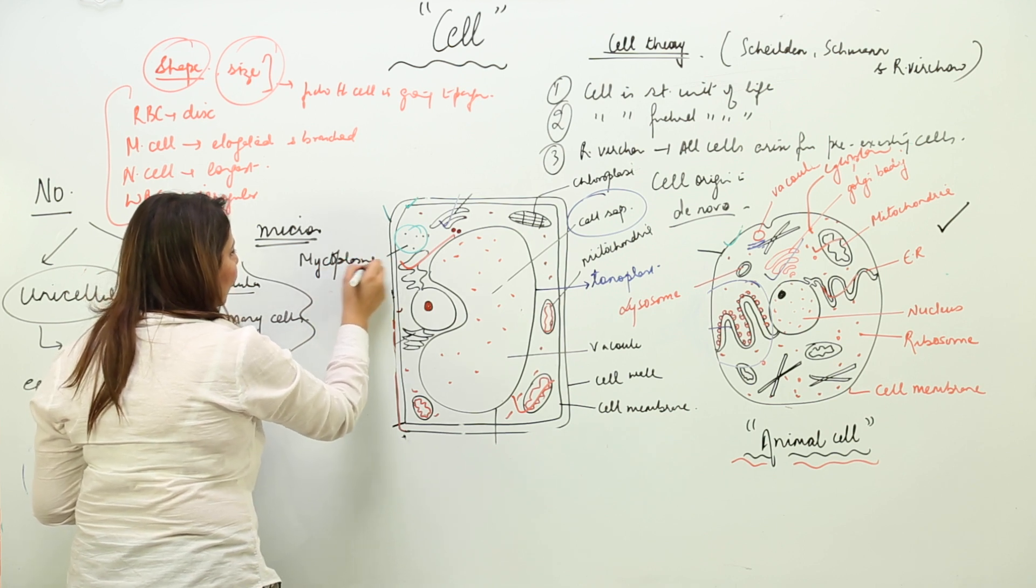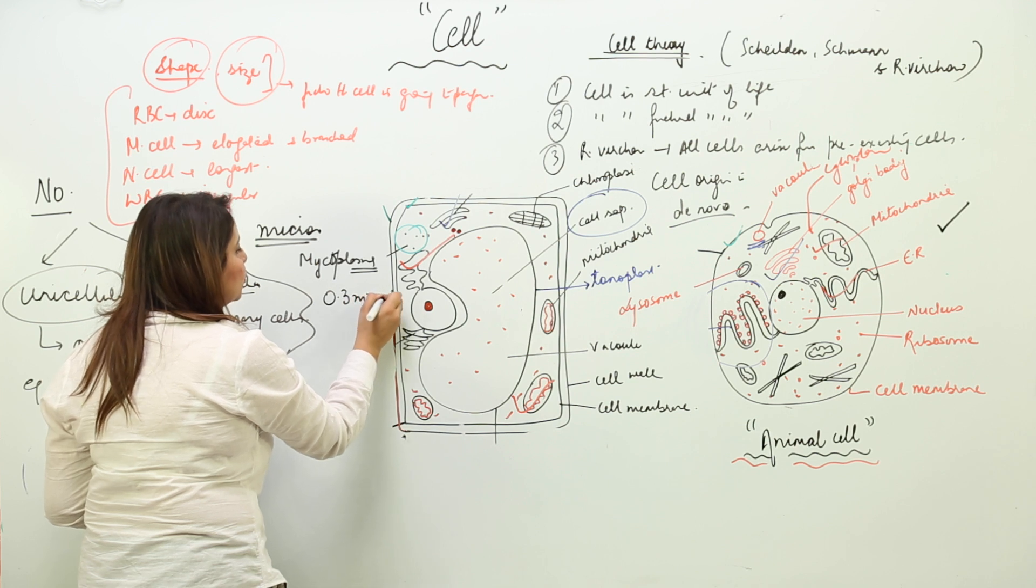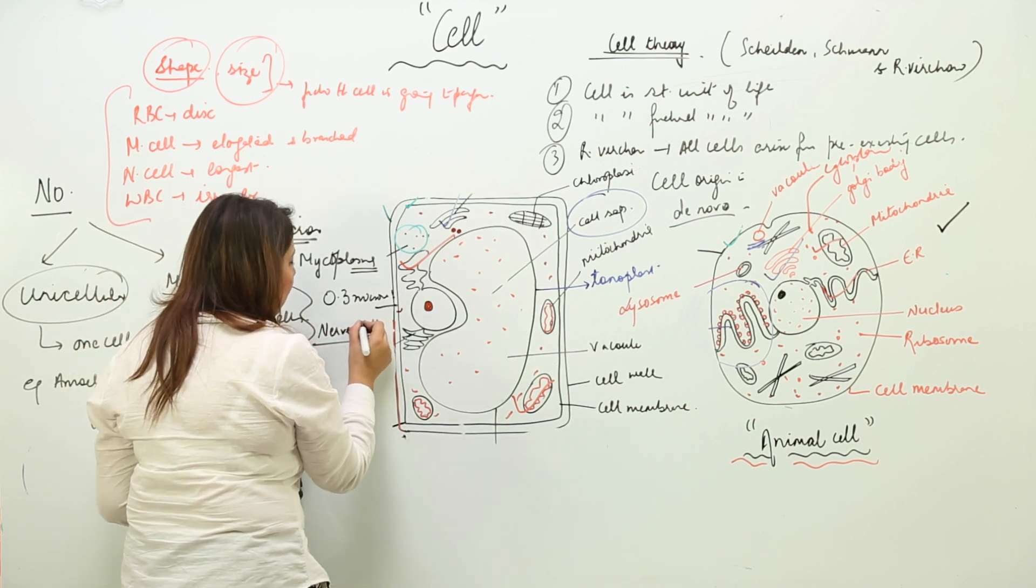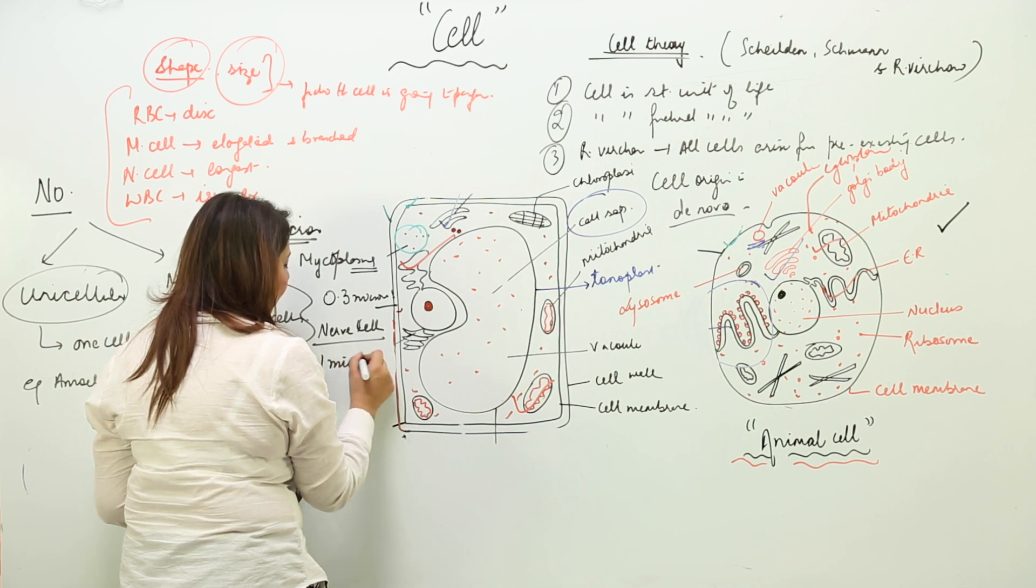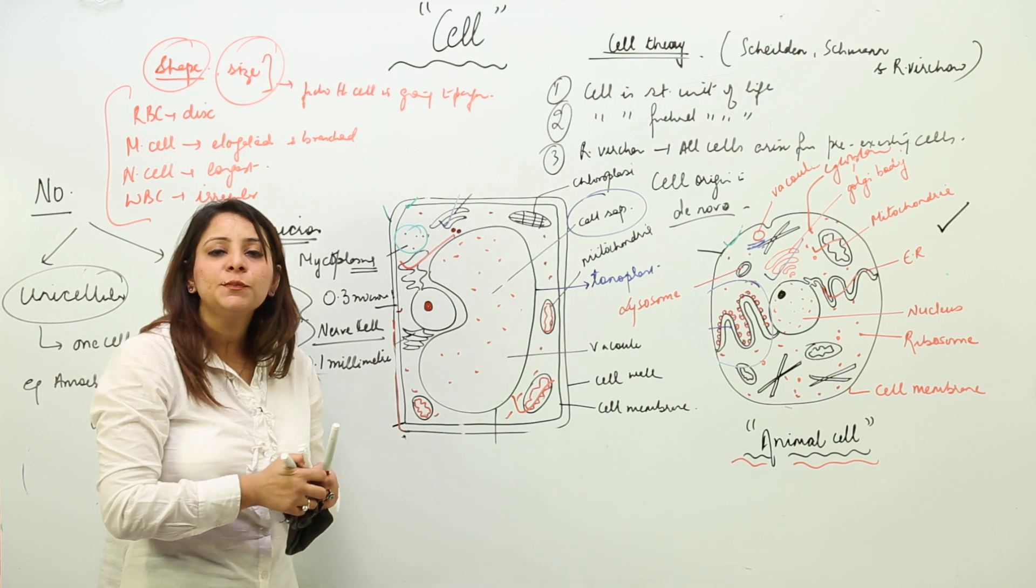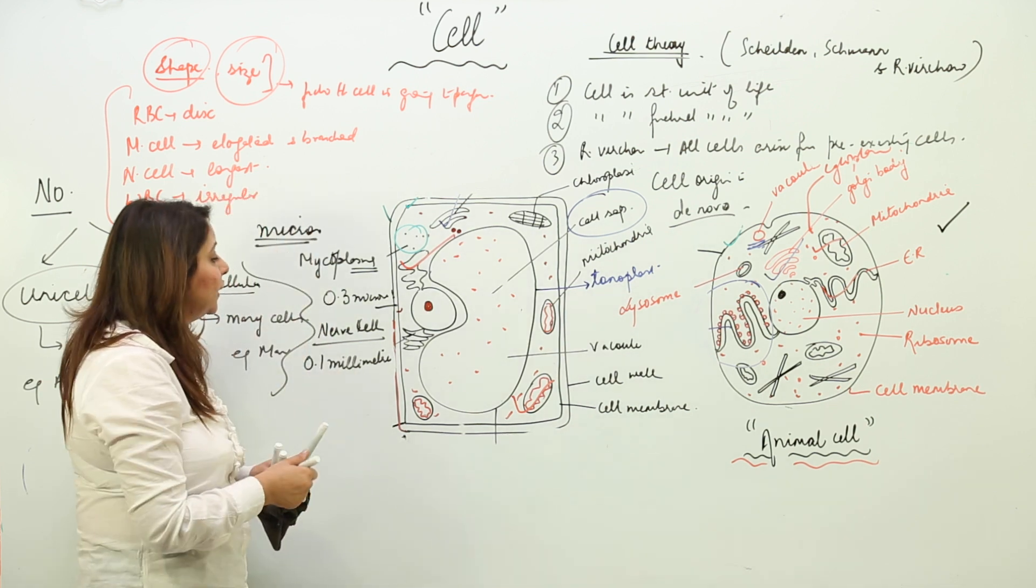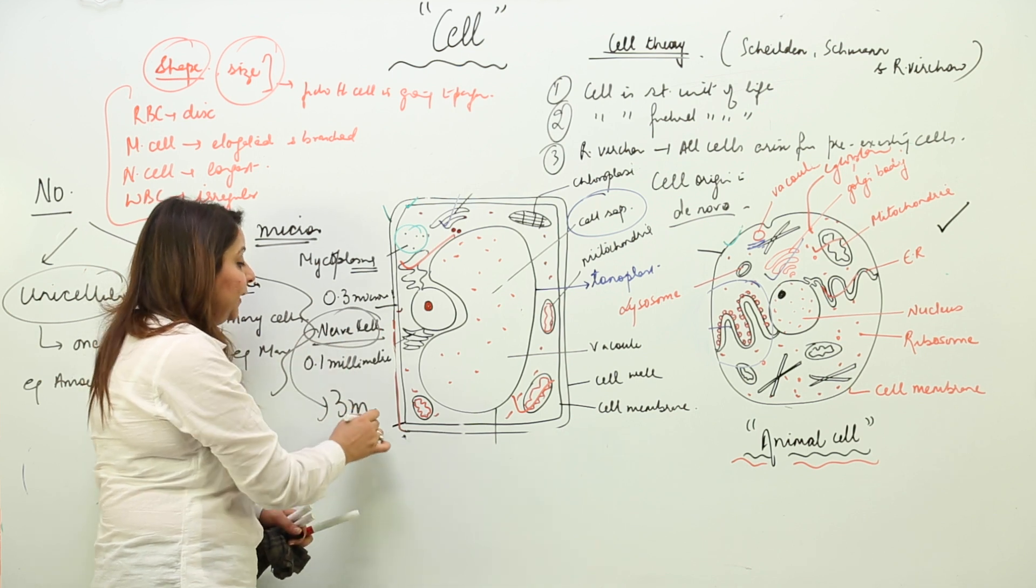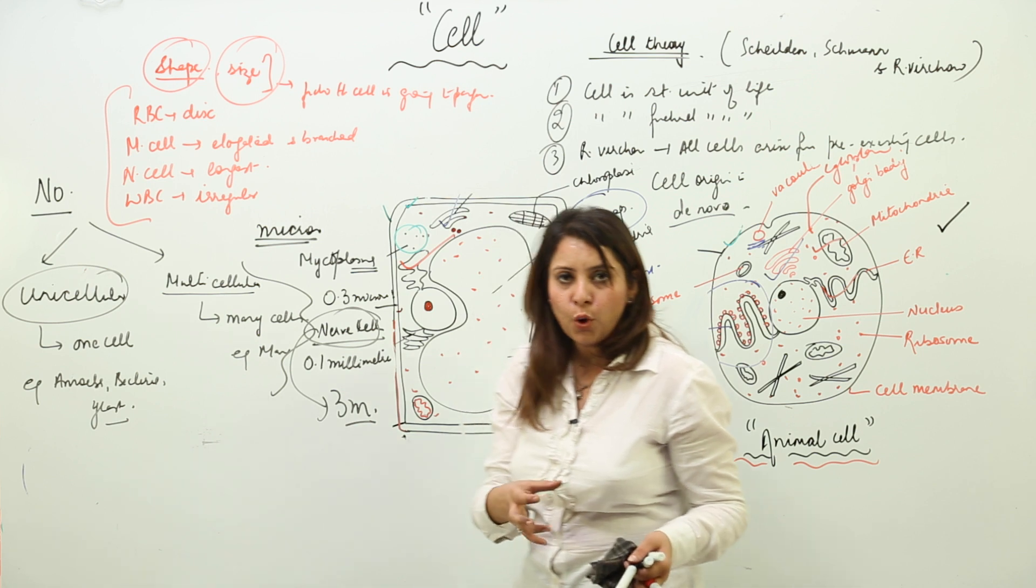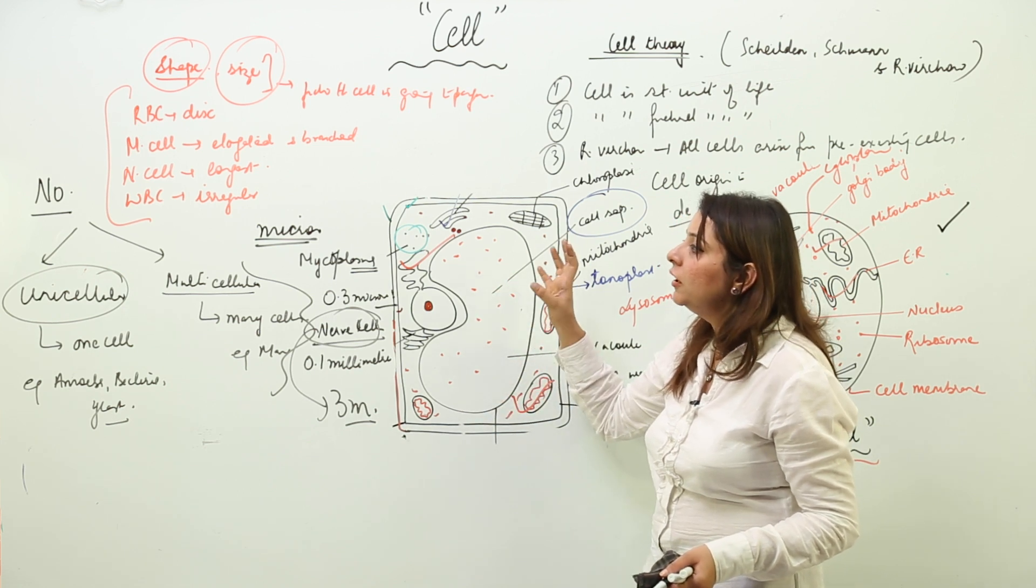The smallest cell that is being found is mycoplasma, one of the species of bacteria. Its size is 0.3 micron. Likewise, we have nerve cell which is the longest cell of our body, approximately 0.1 millimeter long. The longest nerve cell is possessed by the giraffe—the nerve cell is actually of 3 meters, not millimeters. Such a long nerve cell is there.